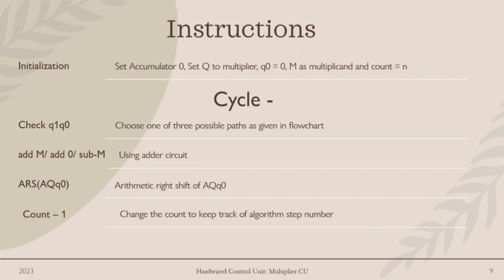Each step of this cycle reduces the value of n by 1. Once the value of n reaches 0, the final answer will automatically be shown in the accumulator and multiplier registers combined. Thus, this is how we perform Booth's algorithm in a hardware circuit.